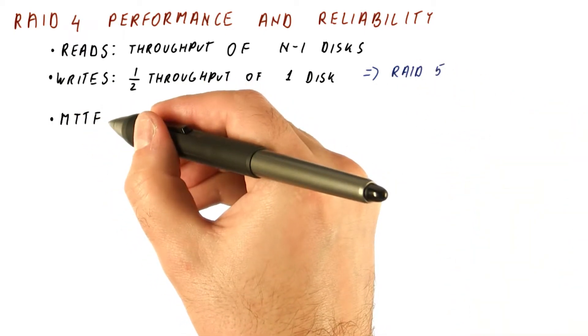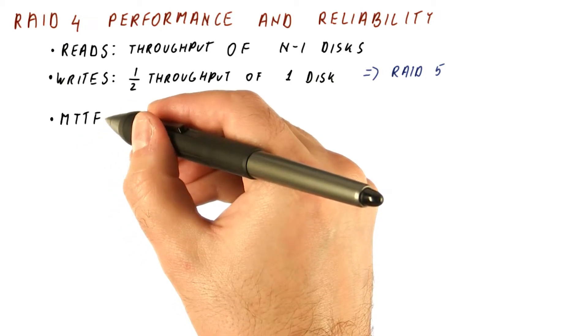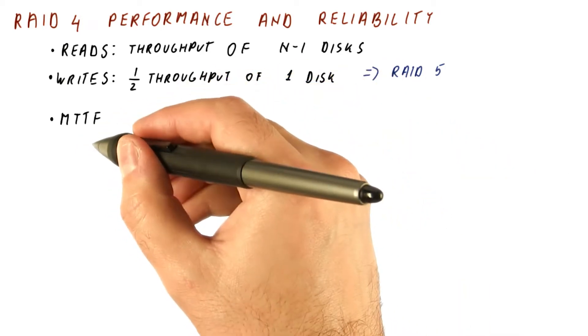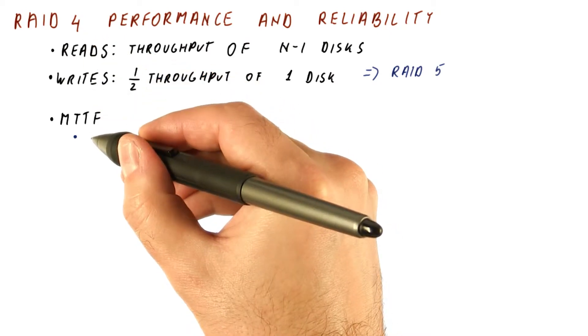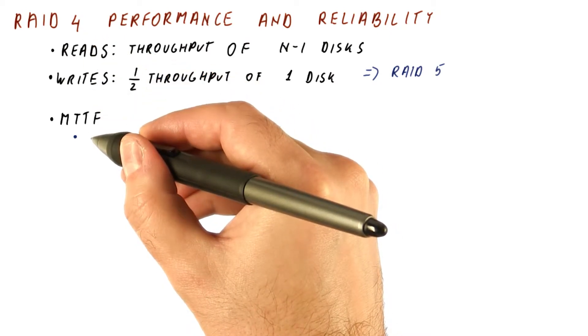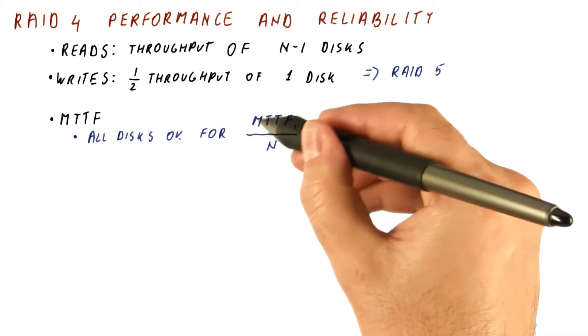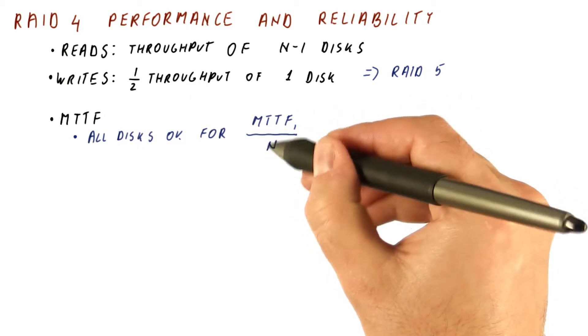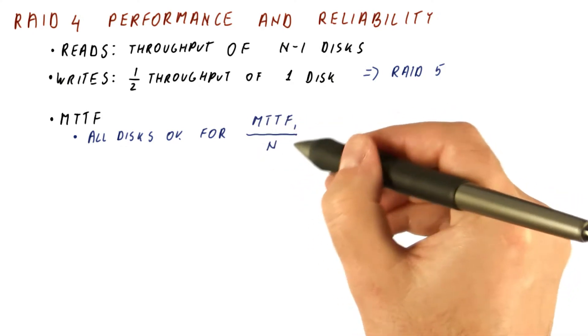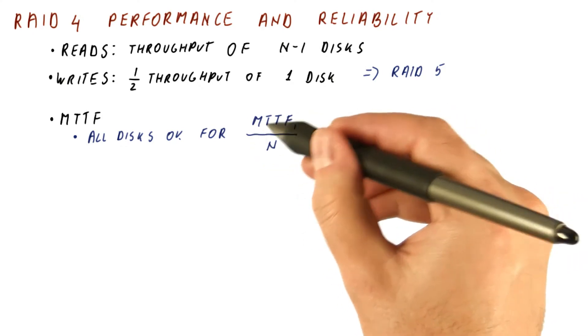Now let's look at the reliability. What is the MTTF of a RAID4 disk? Again, we have two options. Just like RAID1, the first period we get is while all of the disks are working. The time we have during that period is on average MTTF of the single disk divided by n, because that's how long we have for the first of n disks to fail.